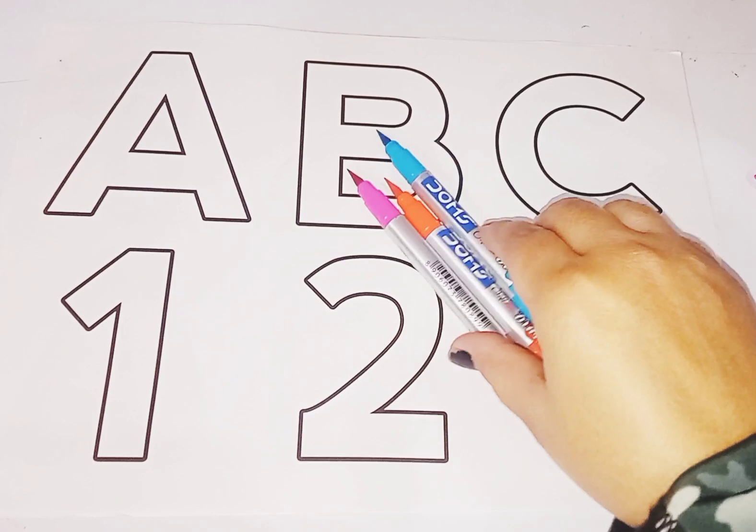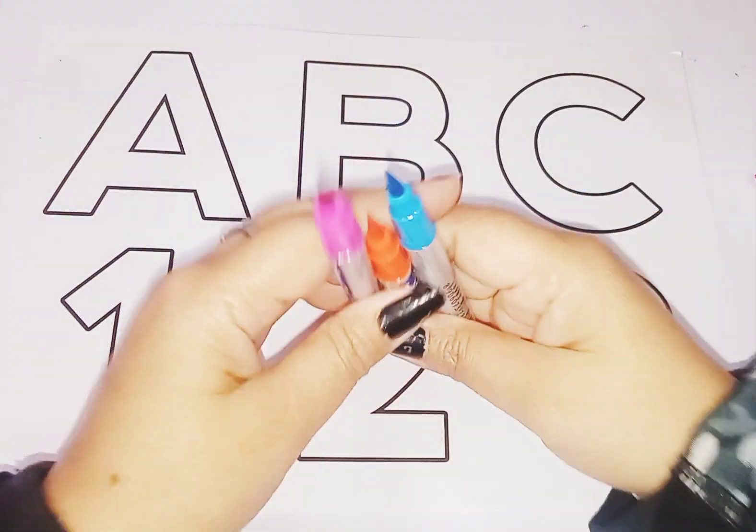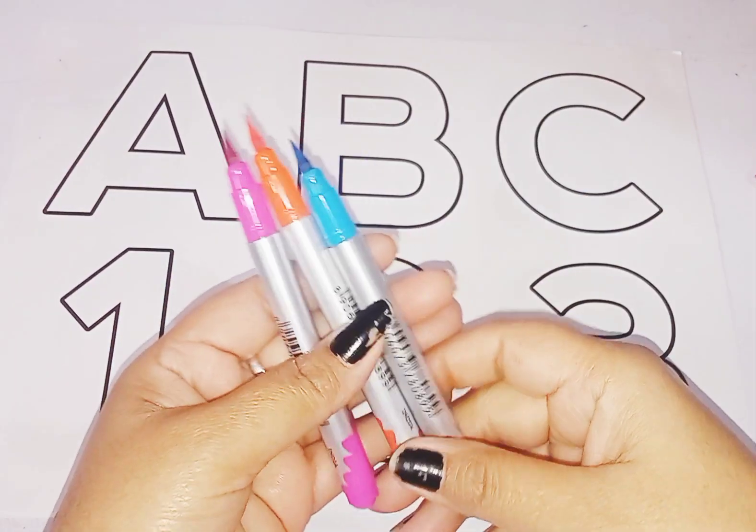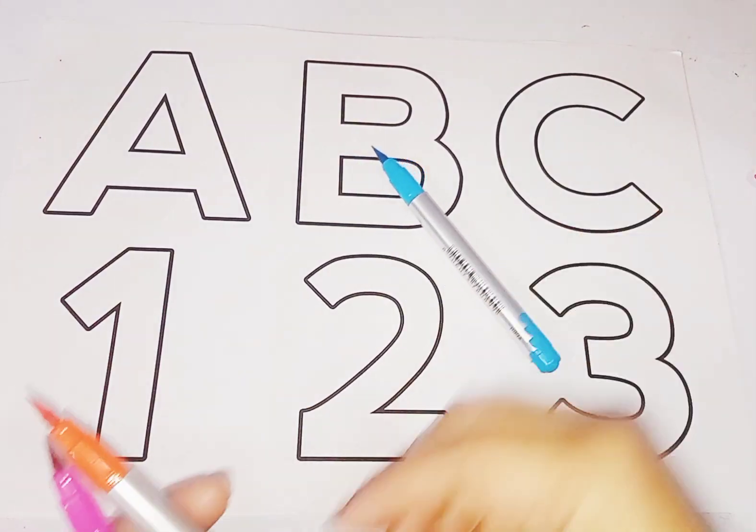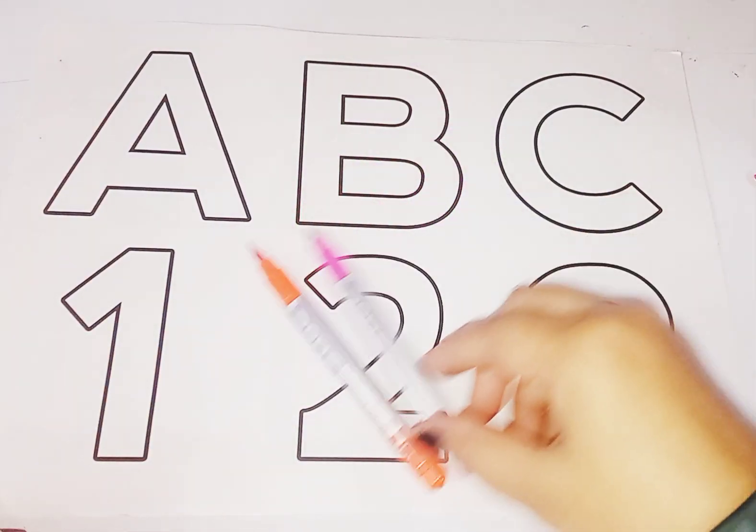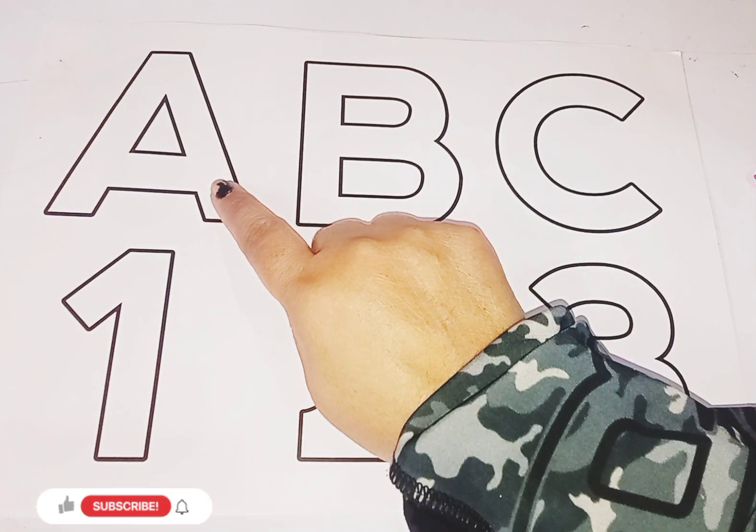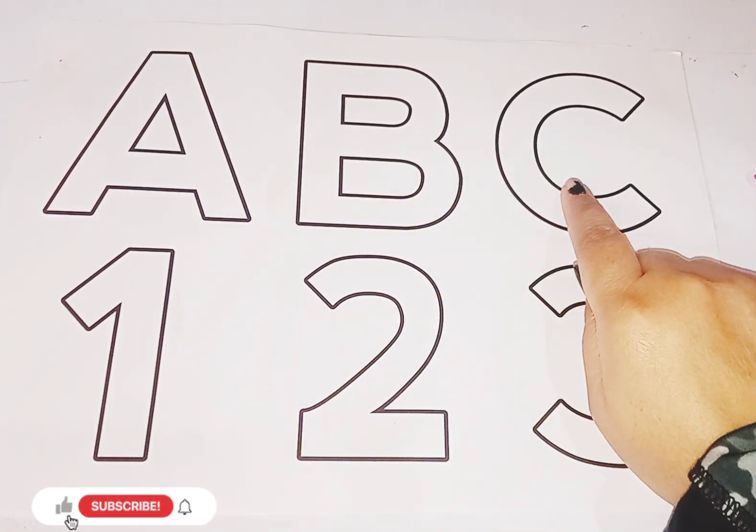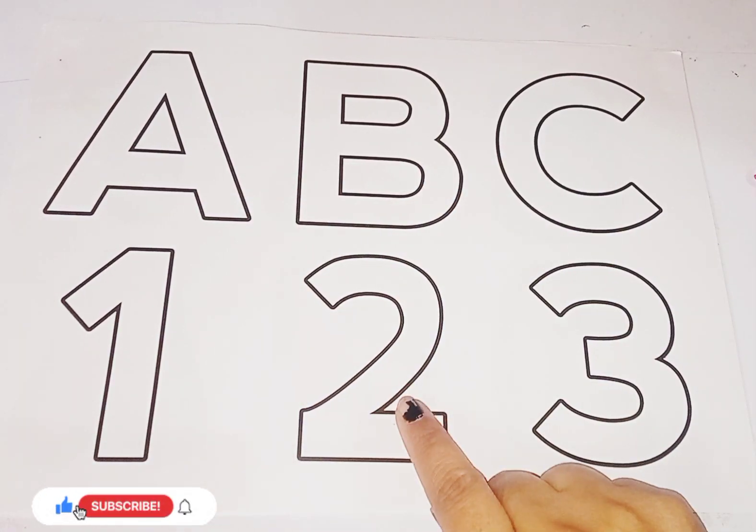These are colors. What is this kids? These are colors. This is sky blue color, orange color, pink color. Today we learn alphabets A, B, C and numbers 1, 2, 3.